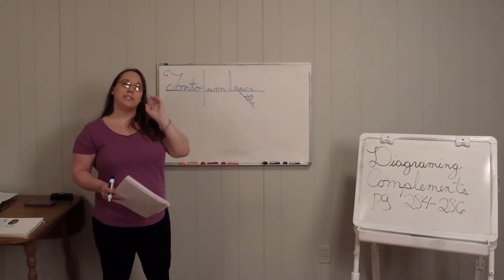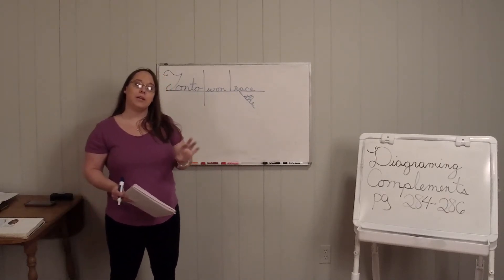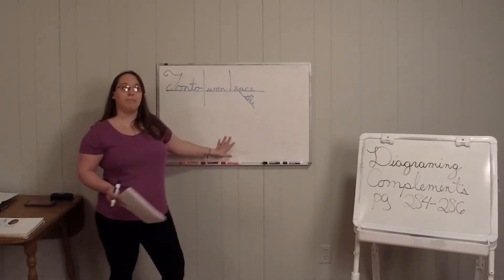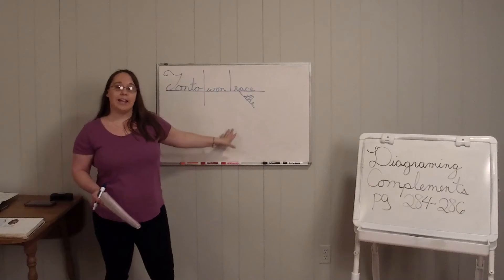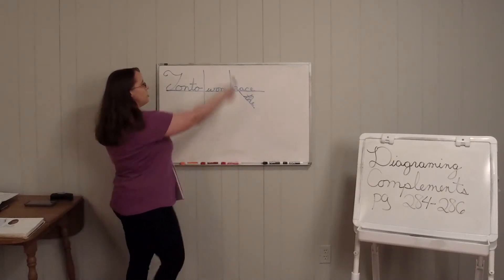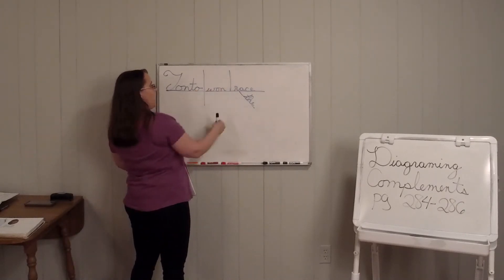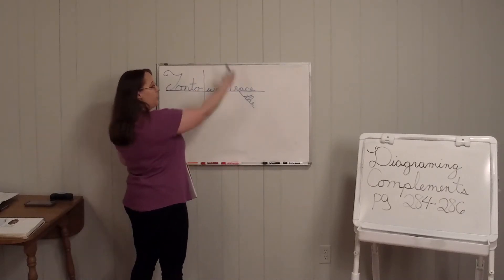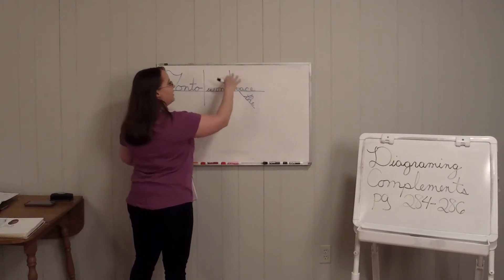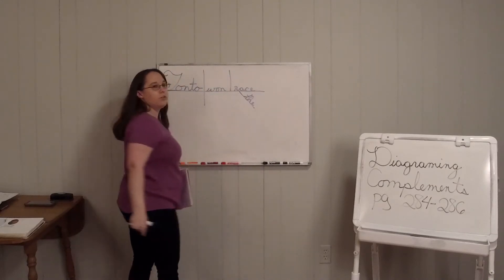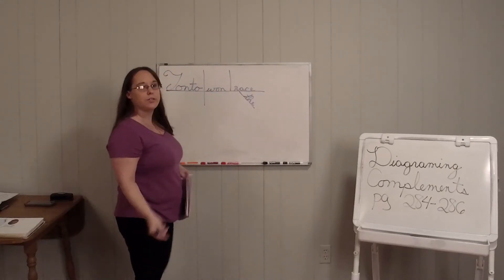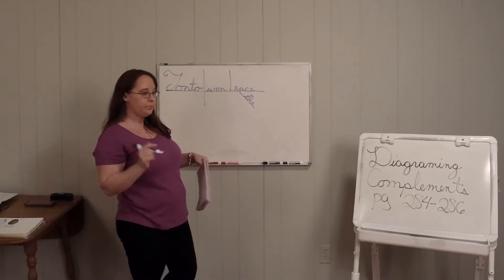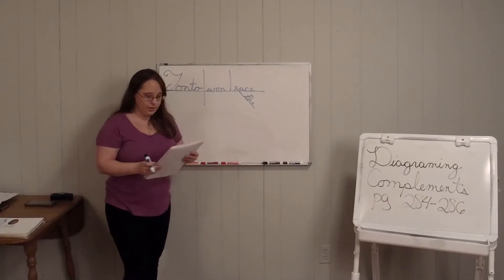When you're diagramming a complement and it's a direct object, it goes right after the verb — you put a straight line and write the direct object. That's all you have to do.